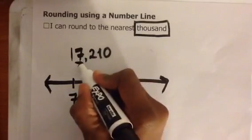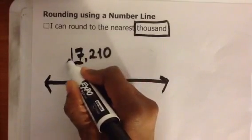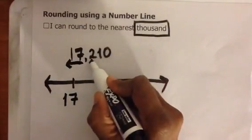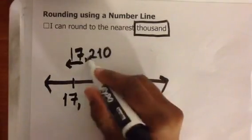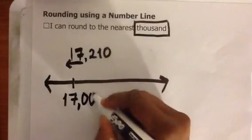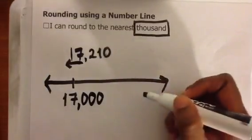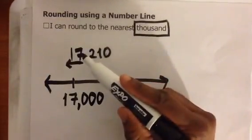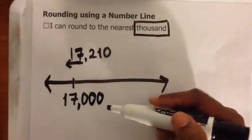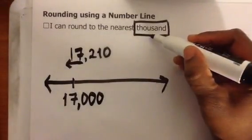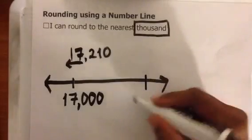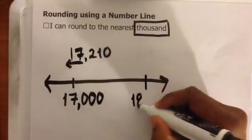I need to remember that everything to the left of that place value gets left, and everything to the right becomes a zero. The 200 becomes nothing, the 10 becomes zero, and the zero stays zero. So a close but easier number to 17,210 is 17,000. I'm rounding to the nearest thousand, so I need to add a thousand: 17,000 plus 1,000 is 18,000.